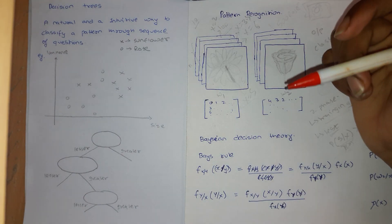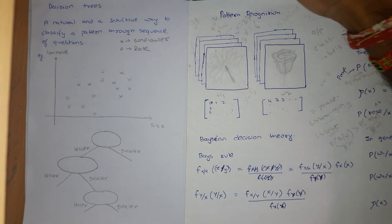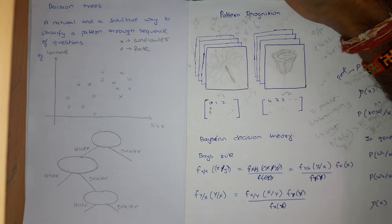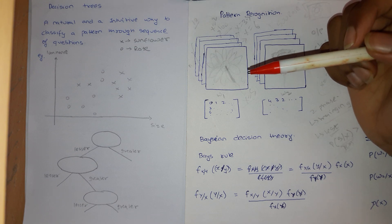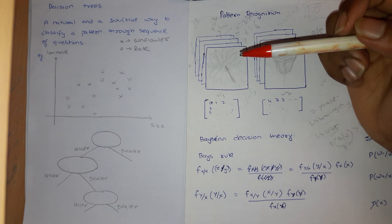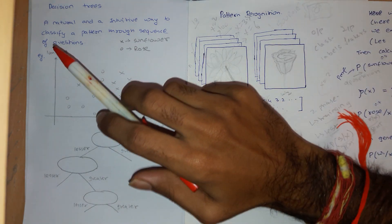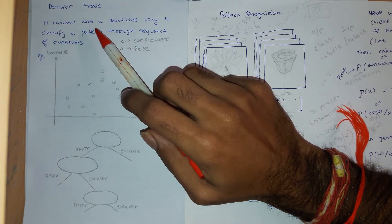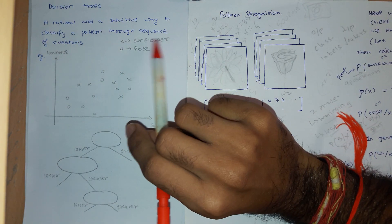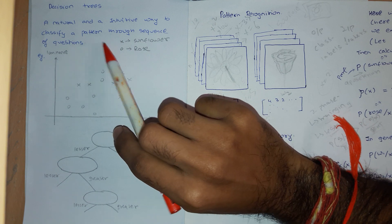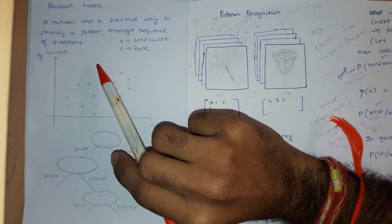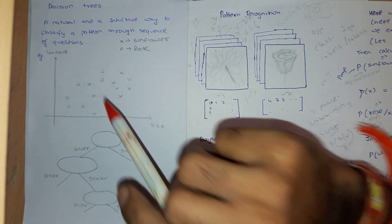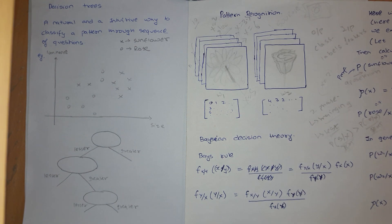Hello guys, in this video we are going to talk about decision trees. So what is decision trees? Basically it is a natural and intuitive way to classify a pattern through a sequence of questions. So let us understand it with an example.